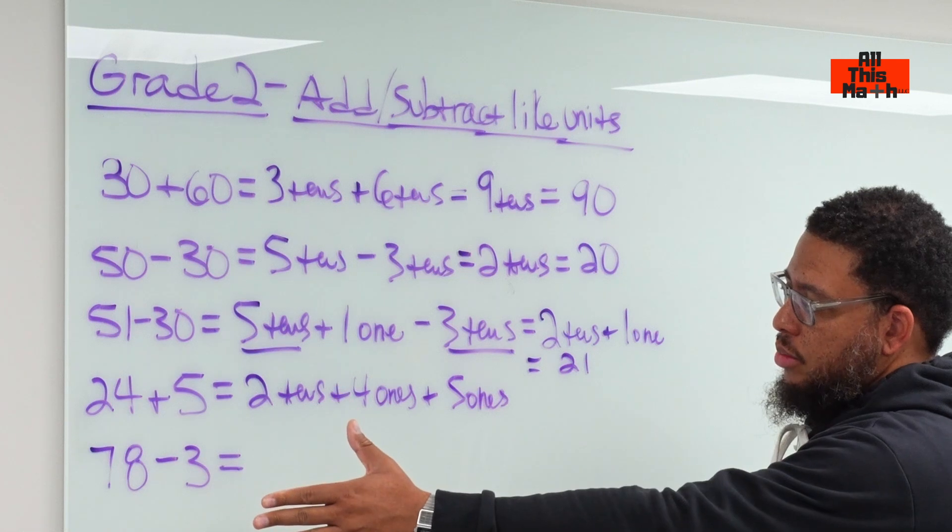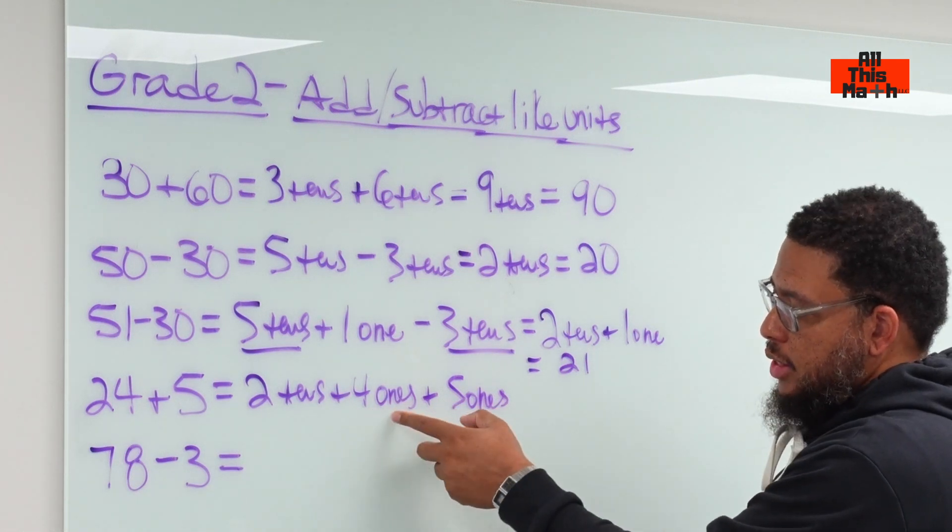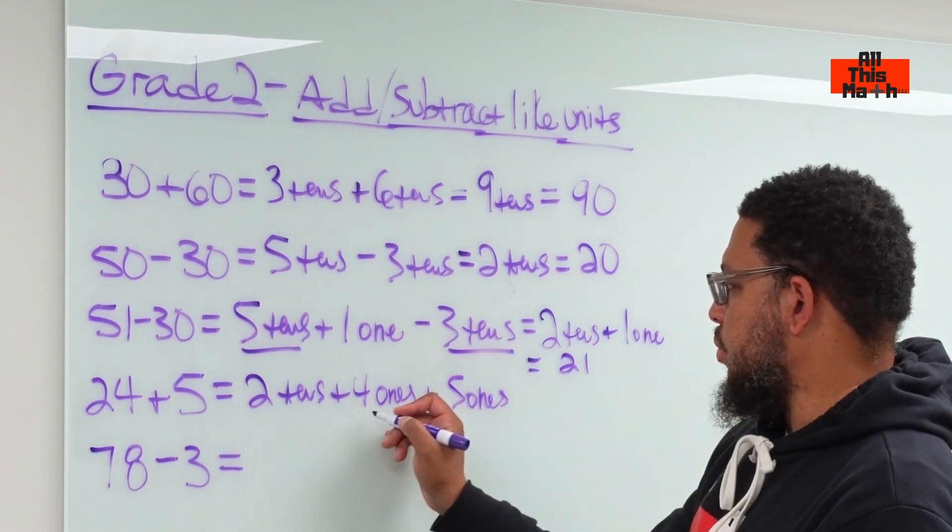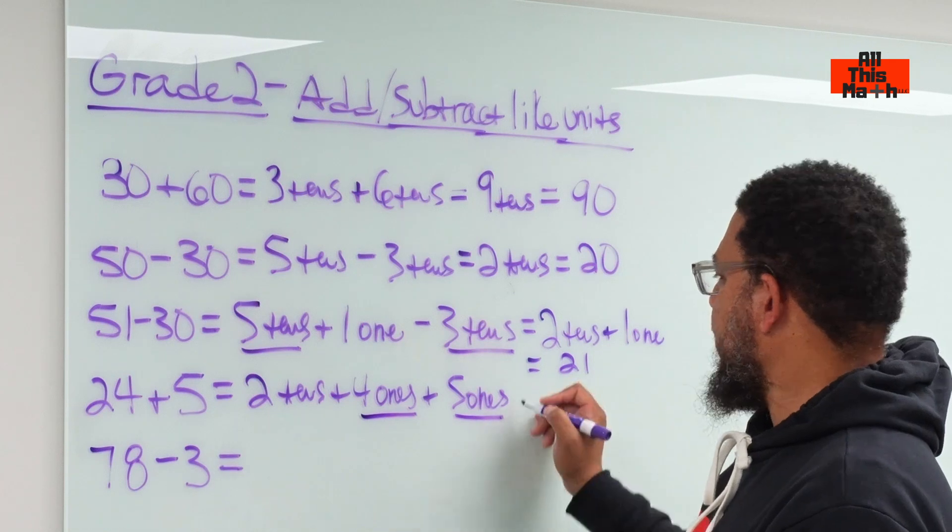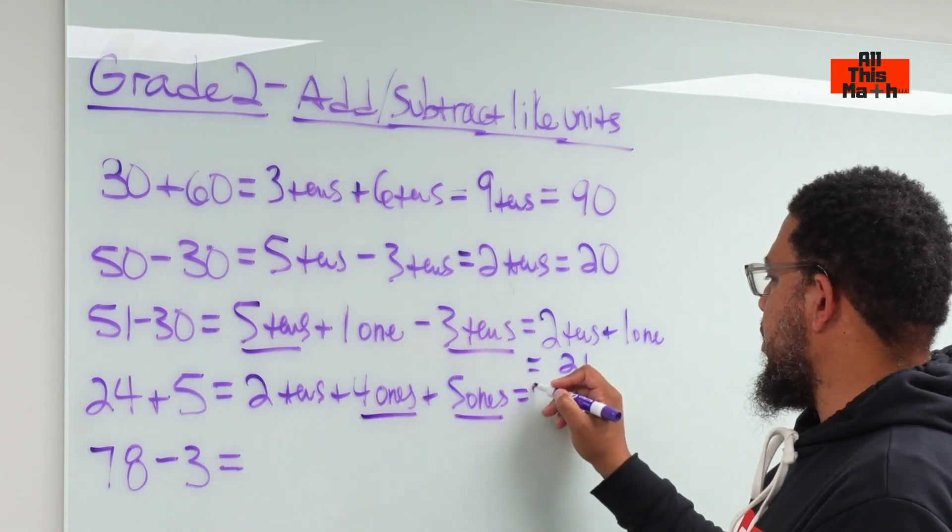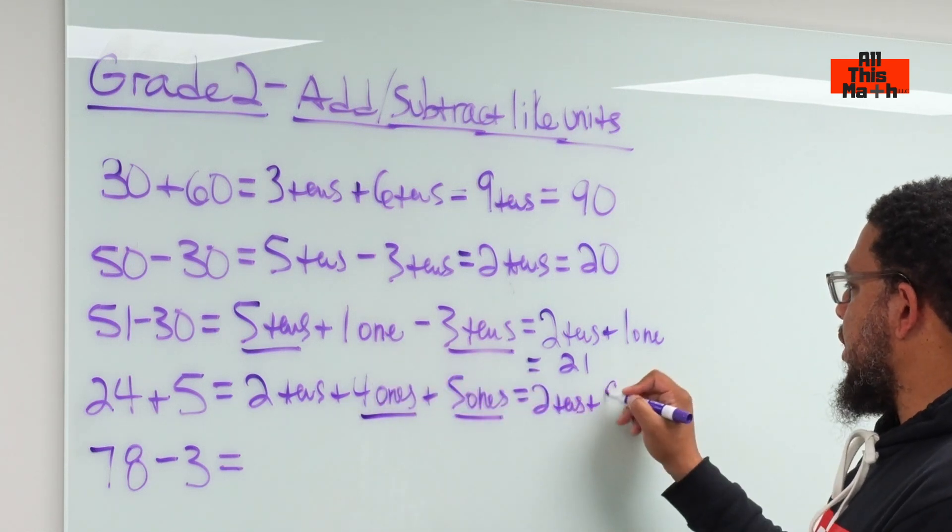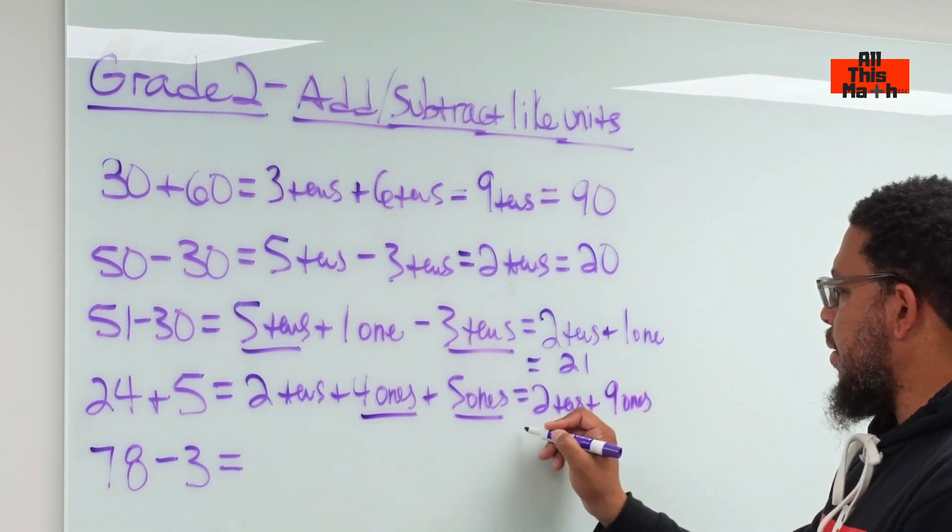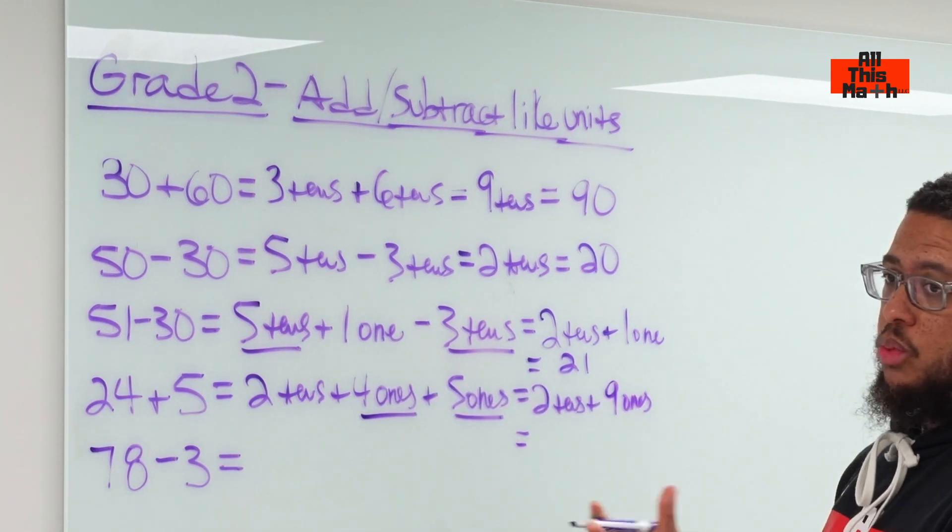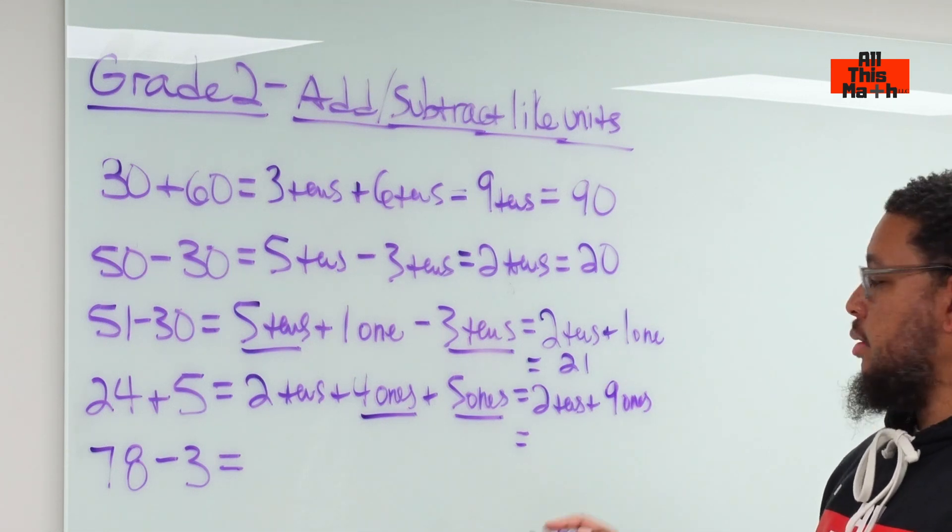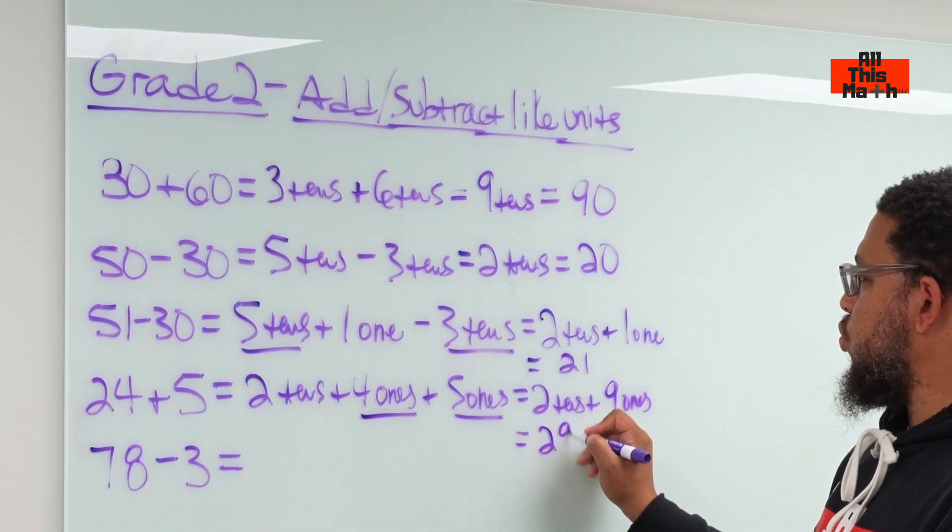Now we want to look for like terms and combine them. The tens doesn't have like terms, but the ones have like terms—the ones and ones go together. So we're going to combine those. That means we have two tens and nine ones because four plus five is nine. So two tens is 20, nine ones is 9, leaving us with a sum of 29.